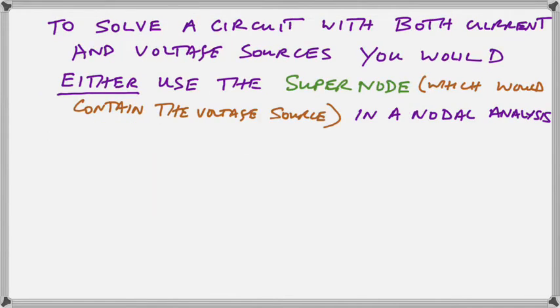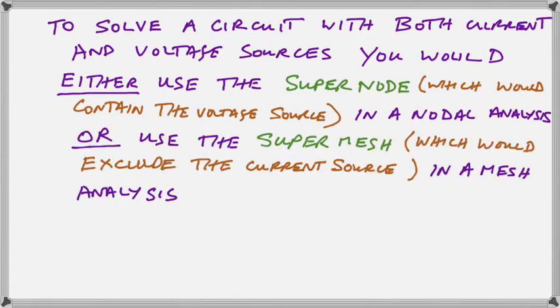To solve a circuit with both current and voltage sources, you would either use the supernode, which contains a voltage source in a nodal analysis, or you could use the supermesh, which would exclude the current sources and provide a KVL equation in a mesh analysis.